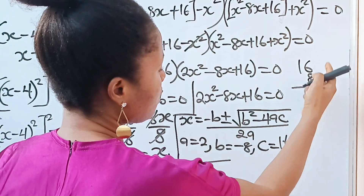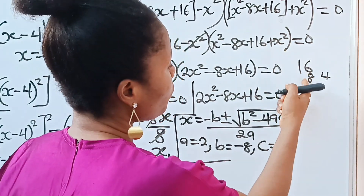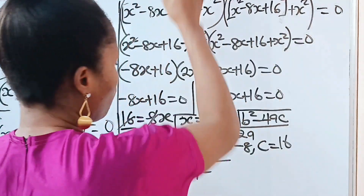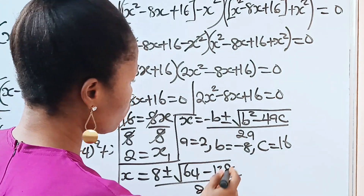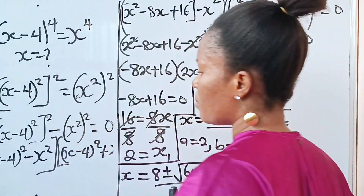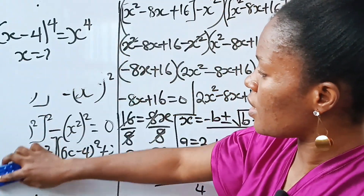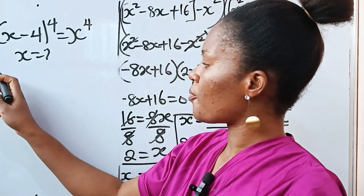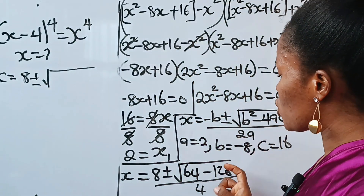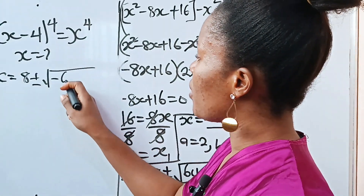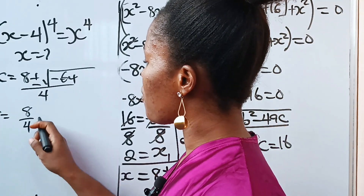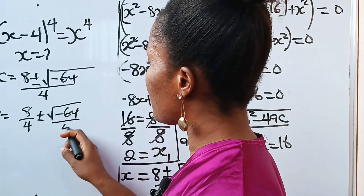Now 4 times 2 is 8, and 8 times 16 is 128. So we have the square root of 64 minus 128, all divided by 2 times 2 which is 4. Continuing, x equals 8 plus or minus square root of minus 64, divided by 4. That simplifies to x equals 8 over 4, plus or minus square root of minus 64 over 4, giving x equals 2 plus or minus square root of minus 64 over 4.